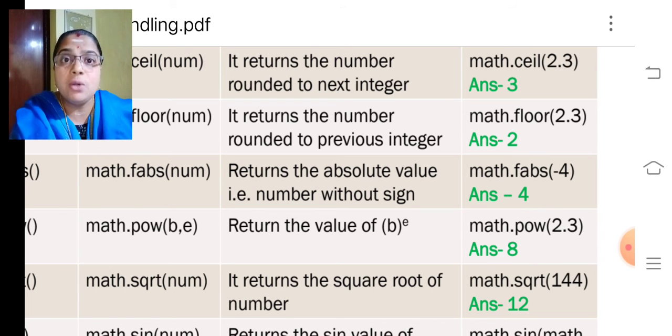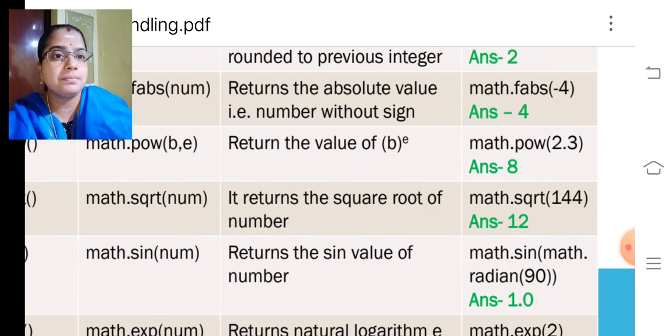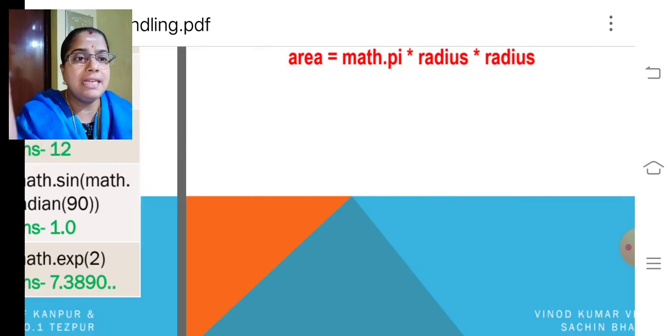Power of 2,3, 2 raised to 3, we will get 8. The square root of 144, we will get 12. And, the math of 90 radian 90 become 1.0 and exponent, we will get.